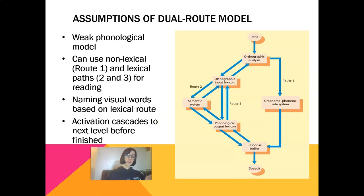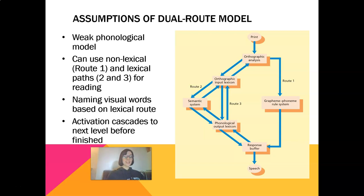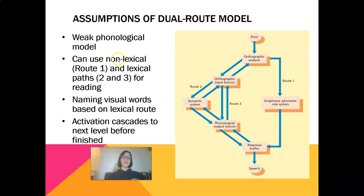Here are some of the major assumptions of the dual route cascaded model. First, the model assumes a weak phonological model — the idea that you do not necessarily have to know what a word sounds like to be able to read it. You can use what is called a non-lexical route, which is Route 1, the grapheme-to-phoneme conversion route. Or we can use lexical word-based paths: Route 2, which utilizes a semantic system, versus Route 3, which utilizes solely an orthographic-to-phonological system. So we've got these three different routes.